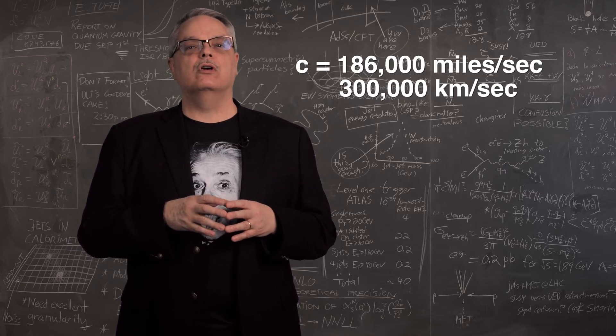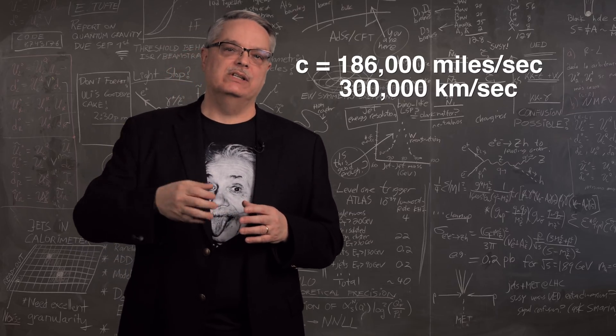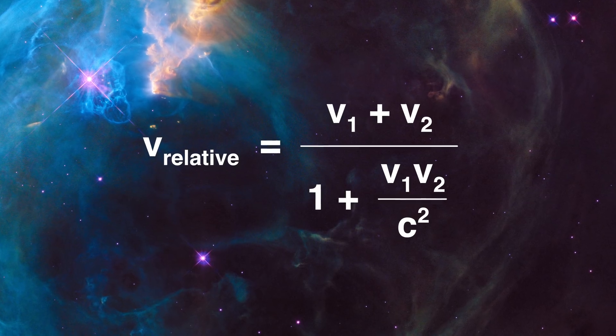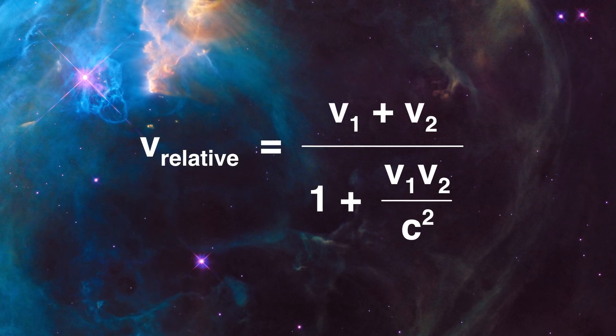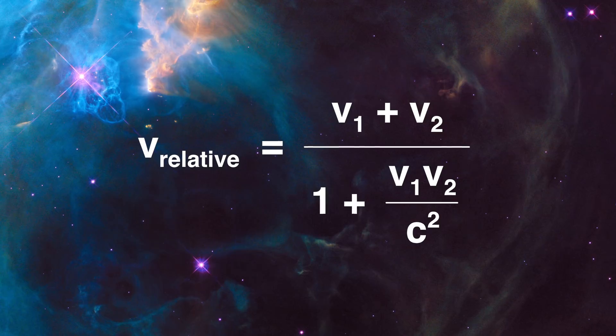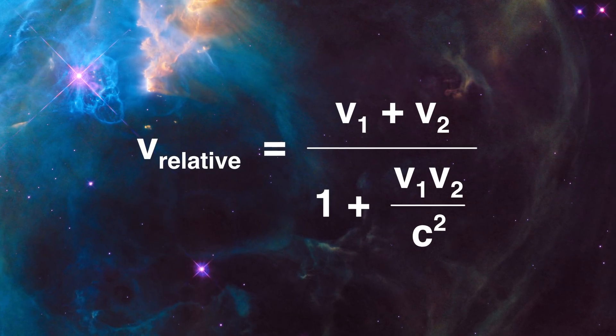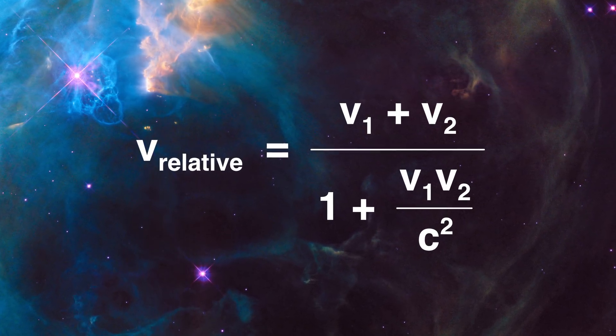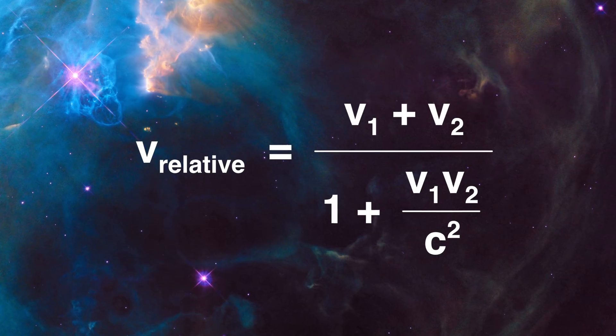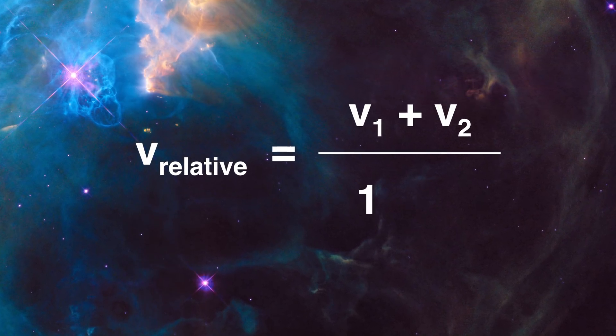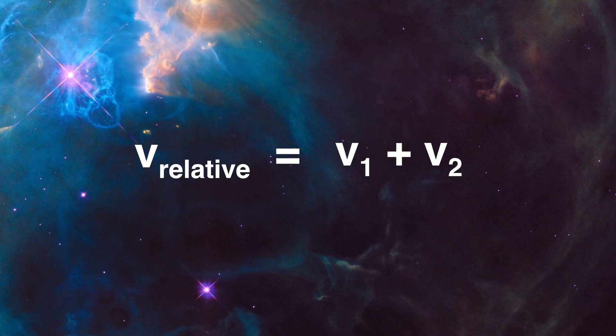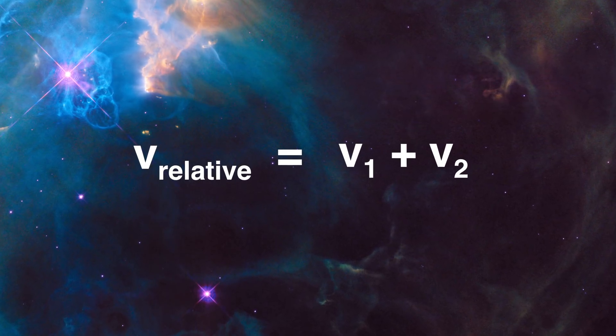Because c is so large, c squared is larger still. Unless the two velocities v1 and v2 are very large, that whole v1, v2 over c squared is basically zero. And we see that this then reduces to the intuitive idea that the two velocities just add.